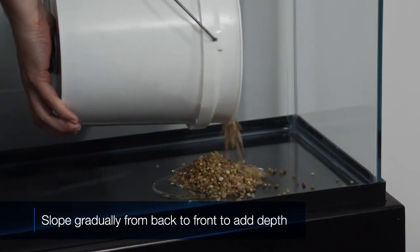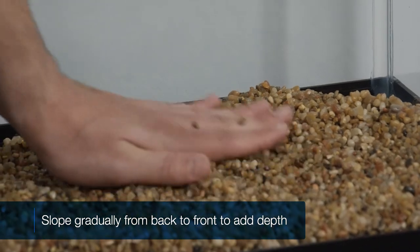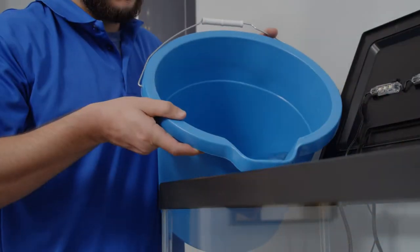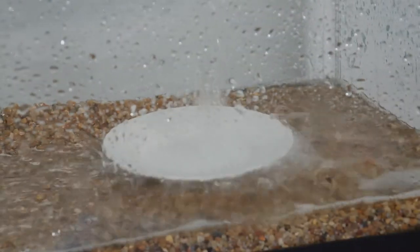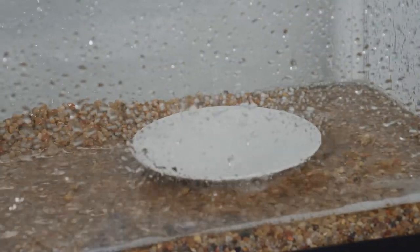Next, add 1 to 1.5 inches of gravel to your tank, and fill a third of it with room temperature water. Pouring the water onto a plate or saucer will keep your gravel in place.